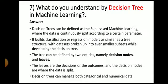What do you understand by decision tree in machine learning? A decision tree is a supervised machine learning approach where data is continuously split according to certain parameters. It builds a classification or regression model in a tree structure. The tree is defined by two entities: decision nodes and leaves. The leaves are the decisions or outcomes, and the decision nodes are where the data is split. Decision trees can manage both categorical and numerical data.